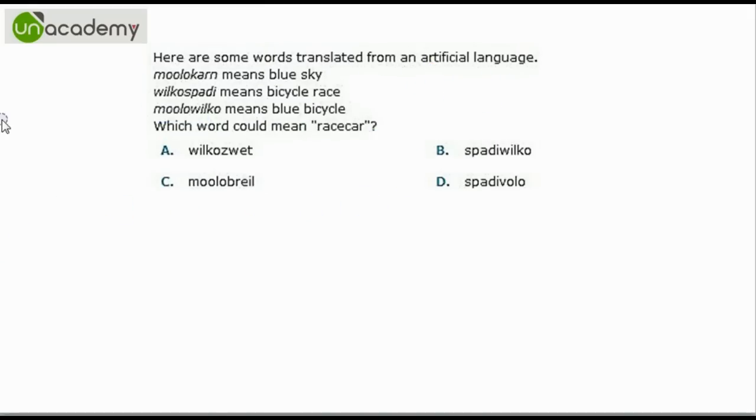Let us see one more example. We have some words blue sky means this, bicycle race means this and blue bicycle means this. From these two we can tell that blue is M-O-O-L-O. And we have to find out the meaning for race car. And bicycle is W-I-L-K-O.